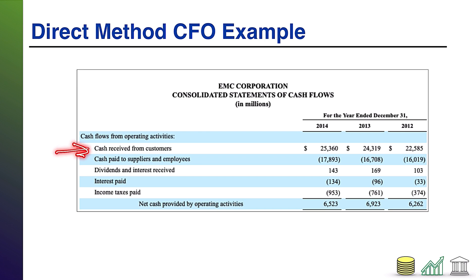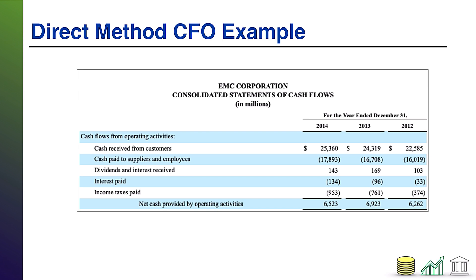Notice it says cash flows from operating activities, and then directly includes cash in or cash out for items that would appear on the income statement: cash received from customers, cash paid to suppliers, dividends received, interest paid, and so forth. They are positive or negative depending on whether cash is coming in or going out. This is a stark difference from an indirect method statement of cash flows, where you would start with net income — which inherently contains all of these items — and then back out the things that are non-cash. In the direct method, you directly include the operating cash items rather than starting with net income and backing out non-relevant items.